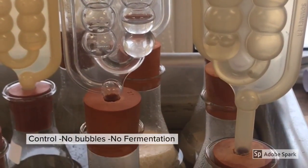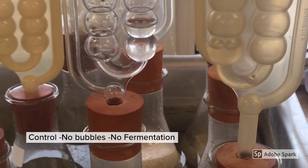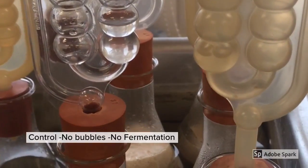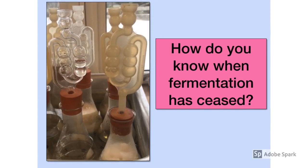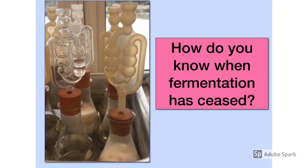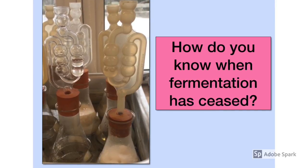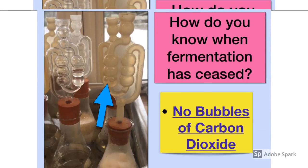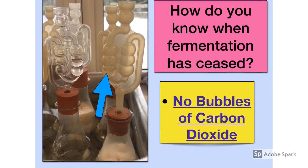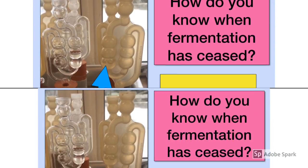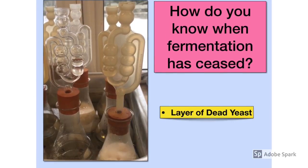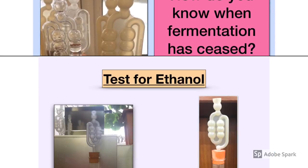Eventually these bubbles will turn the lime water milky, but only in the test flask, not in the control. When you examine both flasks the next day, how do you know that fermentation has ceased? The first thing you would notice is that there are no longer any bubbles of carbon dioxide being produced. You might also notice a layer of dead yeast.